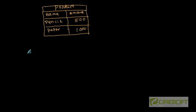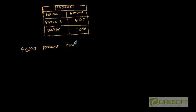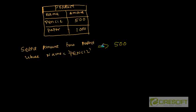Let's say we are doing a transaction where we are going to read how many pencils we have. This is the inventory of a real shop, and somebody is coming and asking: give me 100 pencils. So what are we going to do? We are going to run: SELECT amount FROM product WHERE name = pencil. This is going to give us the amount of pencils, which is 500. Then, since we are going to sell 100 pencils, the new amount equals 500 minus 100, which is 400.